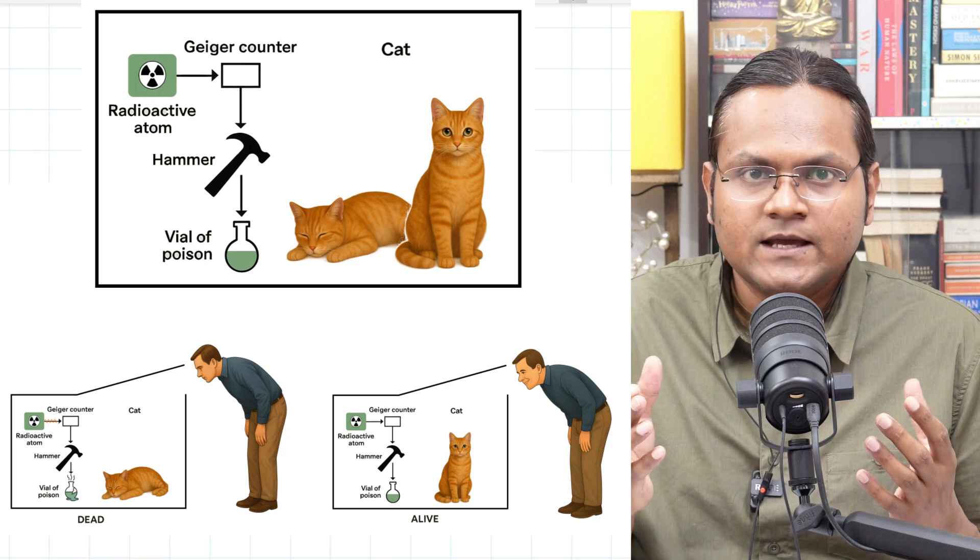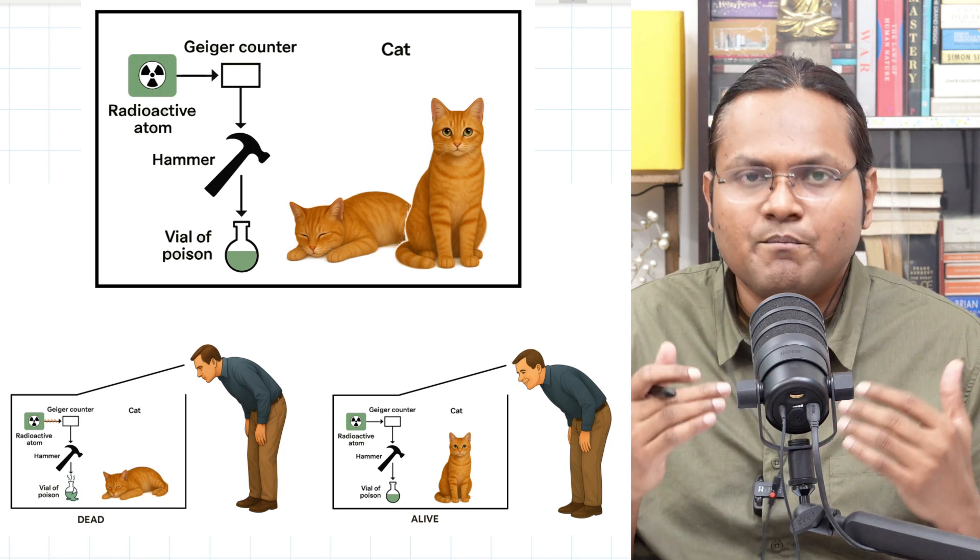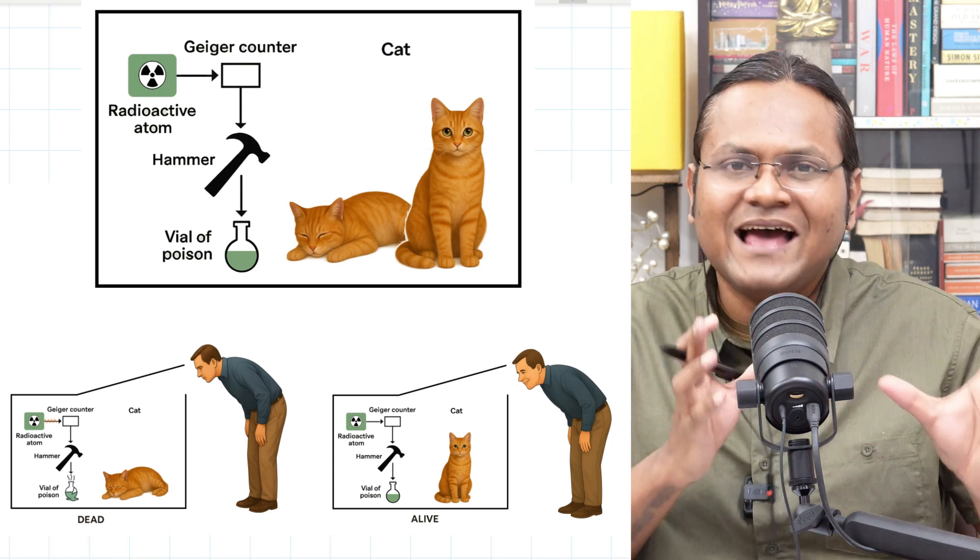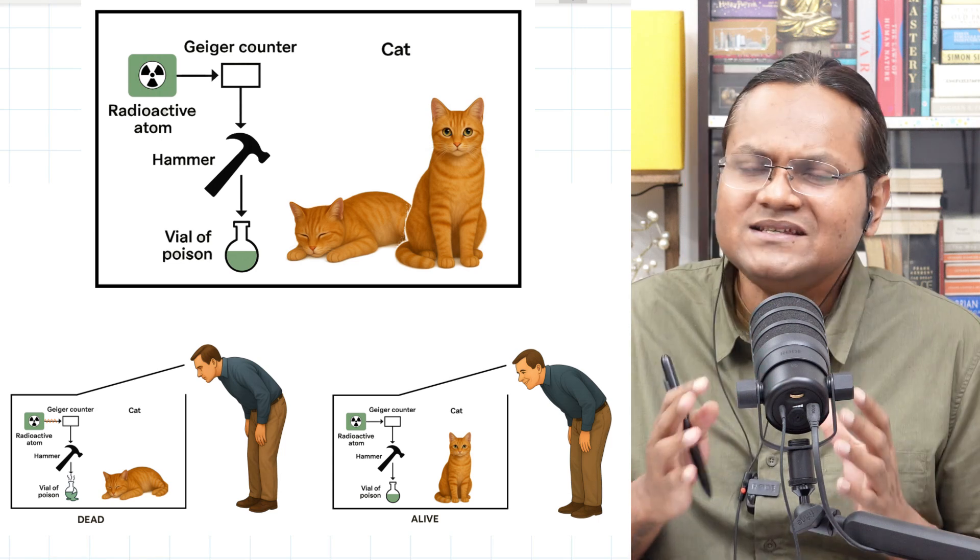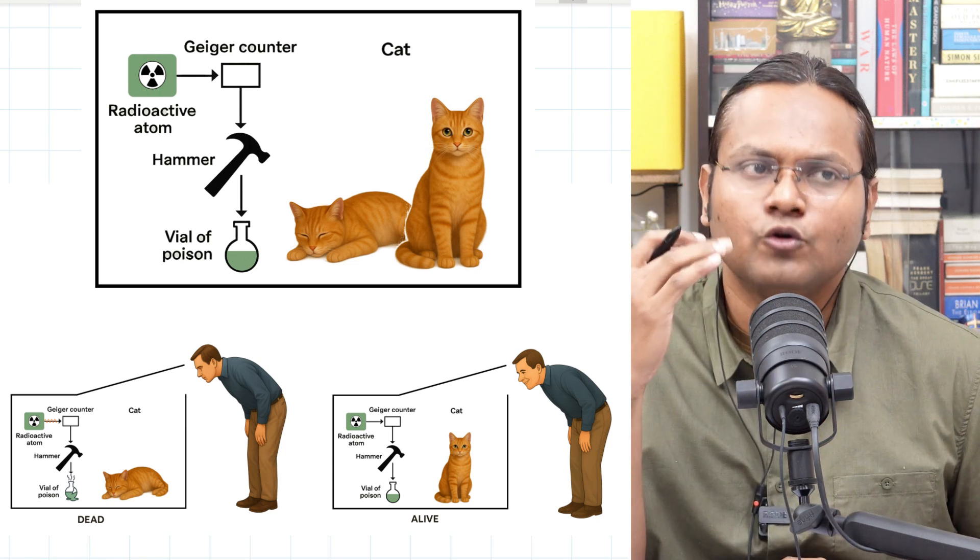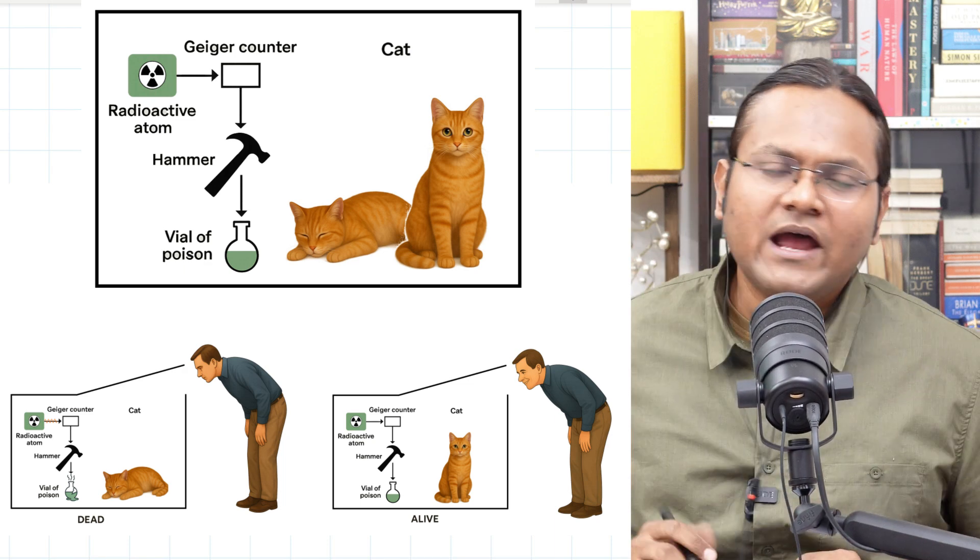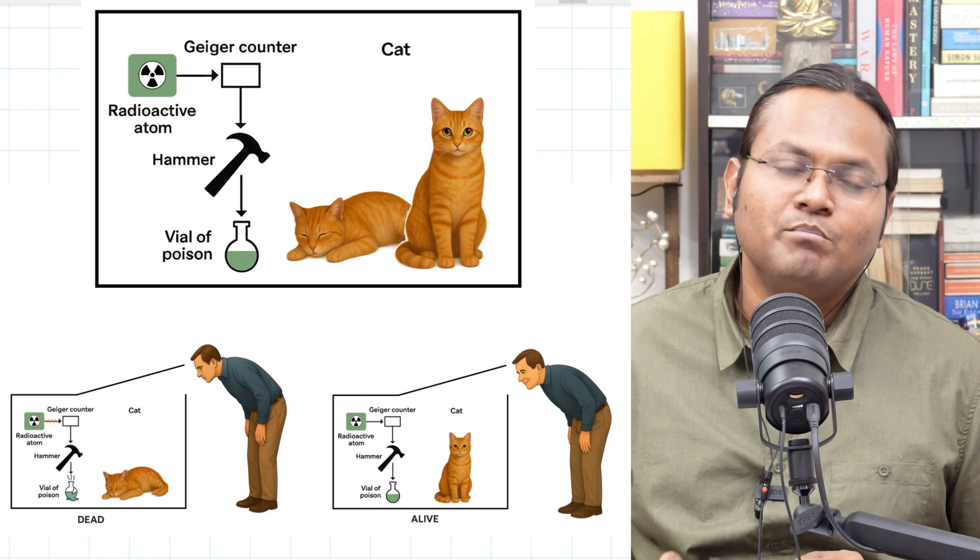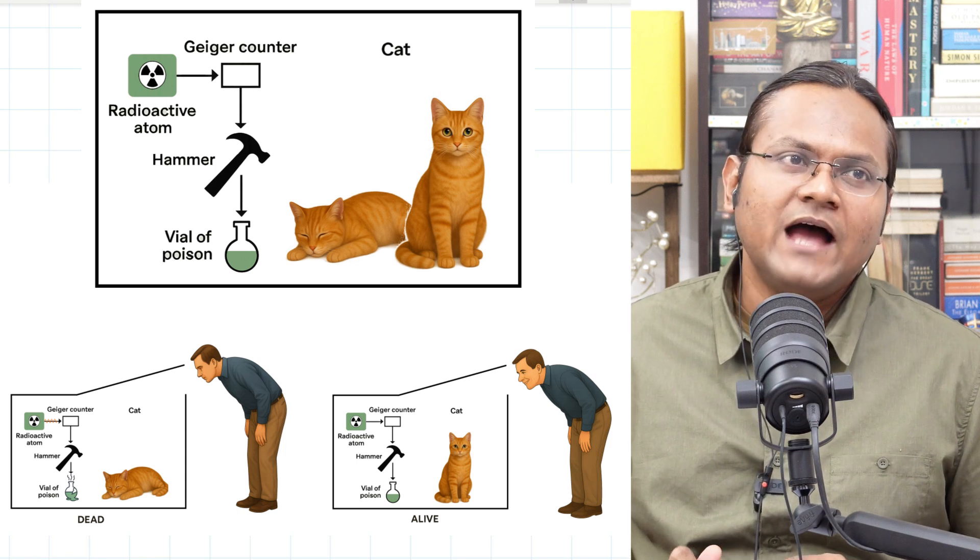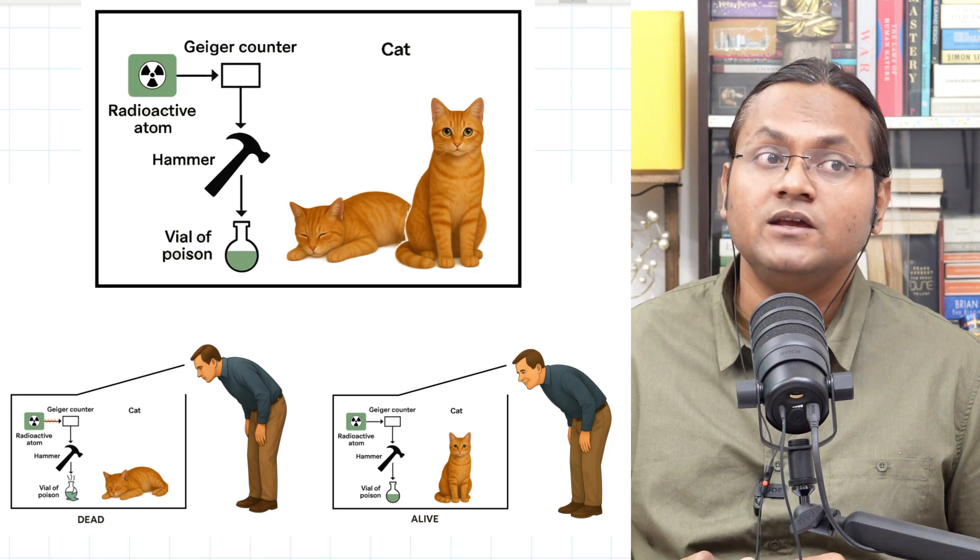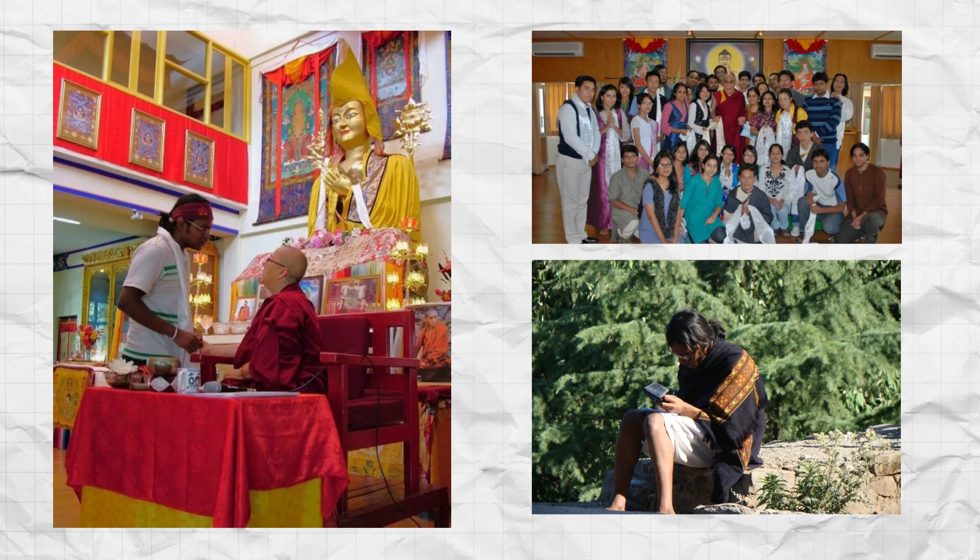So the question is, what role does this measurement process or this observation play in the reality of that particular system? Does an external observer play a role in the system choosing a particular state? You see, when I was much younger, many years back, I was in the Himalayas. I lived in a monastery for a couple of months. I went there to study Buddhism, the philosophy of Buddhism.